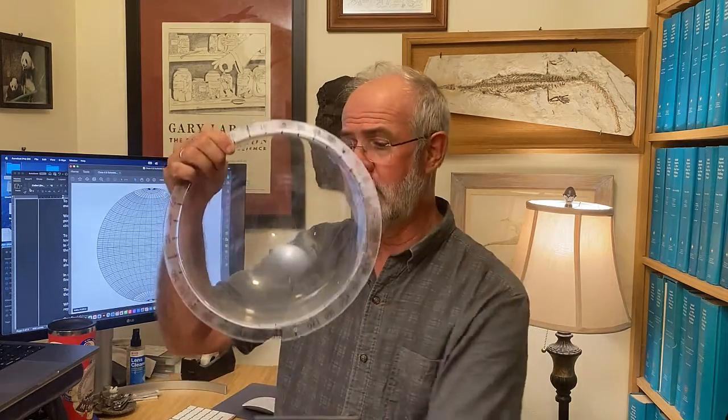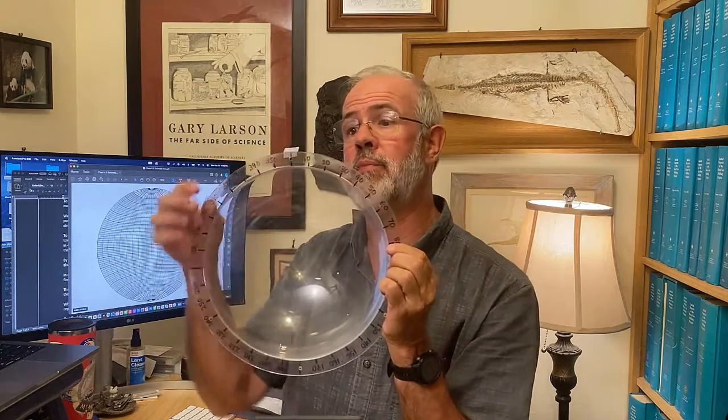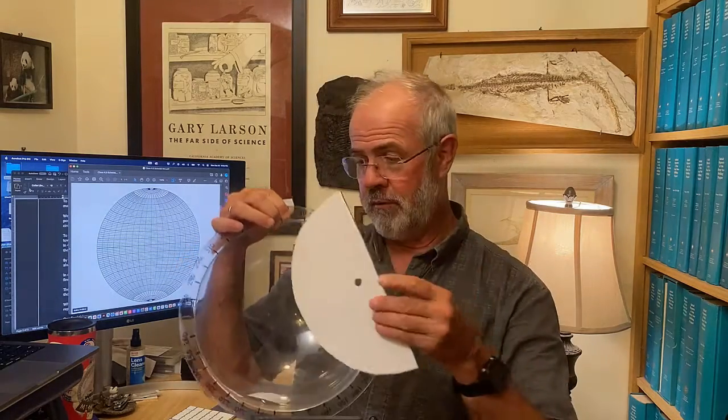You can think of the stereonet as a graphical representation of a bowl. So here we have a bowl for instance and we've marked off the angles of azimuth around the periphery from the north position. Here's the south position down here.